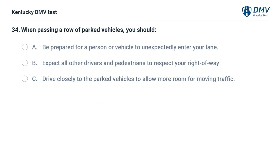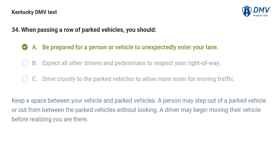When passing a row of parked vehicles, you should: A. Be prepared for a person or vehicle to unexpectedly enter your lane. B. Expect all other drivers and pedestrians to respect your right of way. C. Drive closely to the parked vehicles to allow more room for moving traffic. The correct answer is A. Keep a space between your vehicle and parked vehicles. A person may step out of a parked vehicle or out from between the parked vehicles without looking. A driver may begin moving their vehicle before realizing you are there.